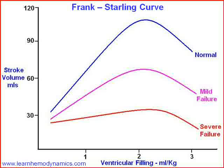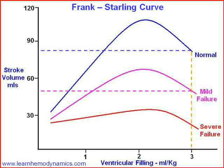Let's increase the loading on this heart a little more — 3 mils per kilo. Now the normal heart can actually stand that remarkably well and can still maintain a stroke volume of 80 mils. Our mild cardiac failure patient has dropped back to about 48 mils. But just look at our severe cardiac failure patient: they are now in big trouble at 25 mils. What we've got to do is optimize this preload and, if possible, get them to change trains onto a better curve.